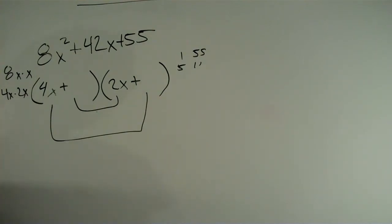So it would make more sense to start with 5 times 11. So you can put 11 here and 5 there and see what you get. And you get 22 plus 20 and that gives you 42.